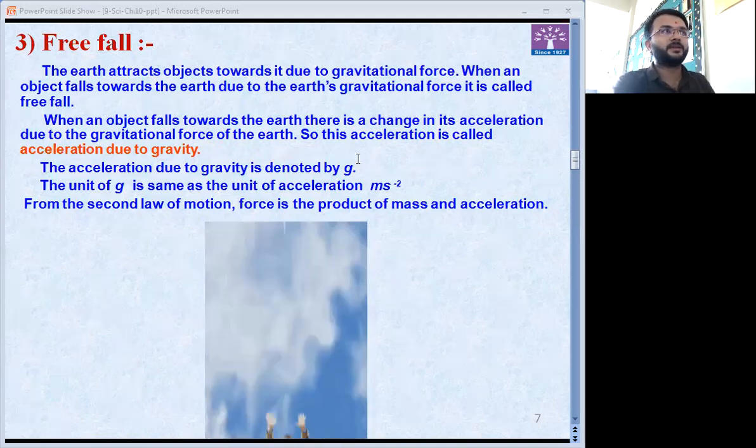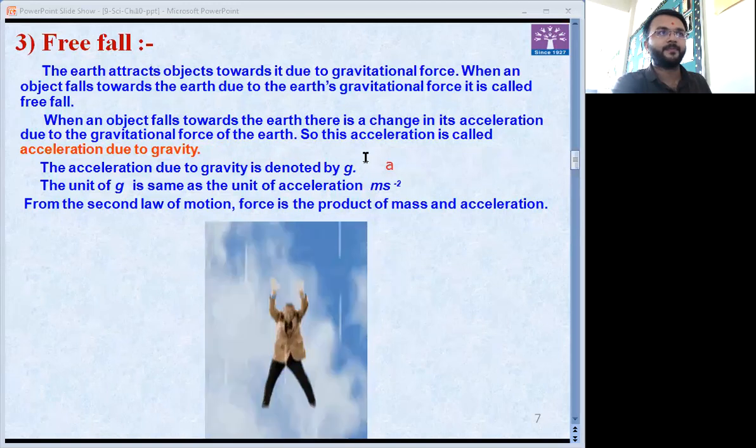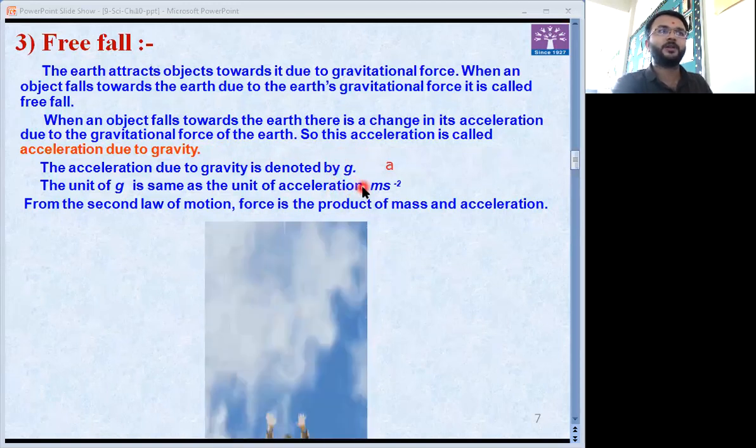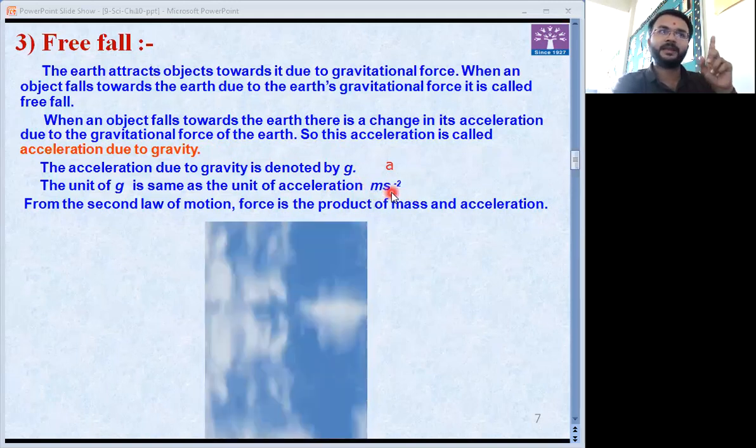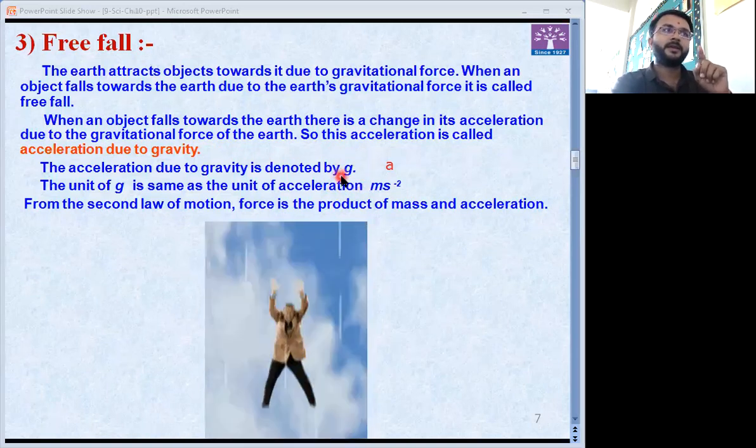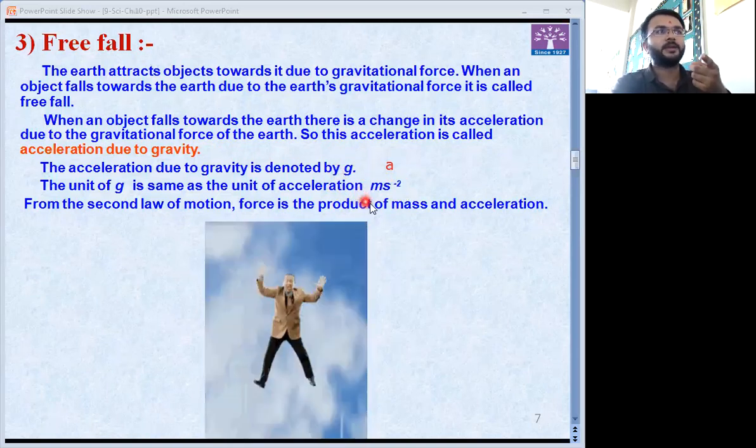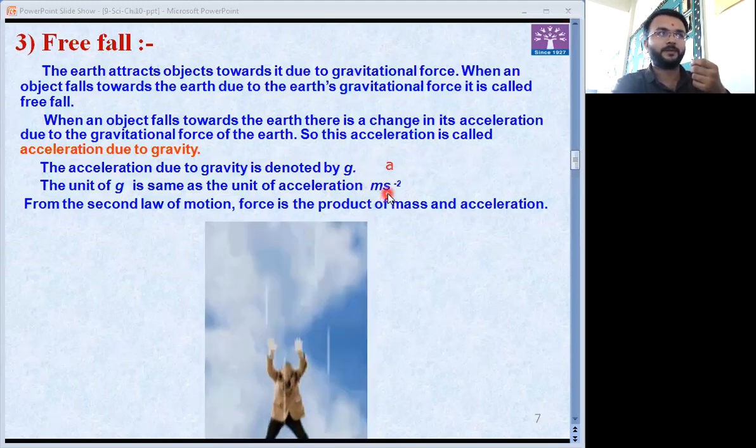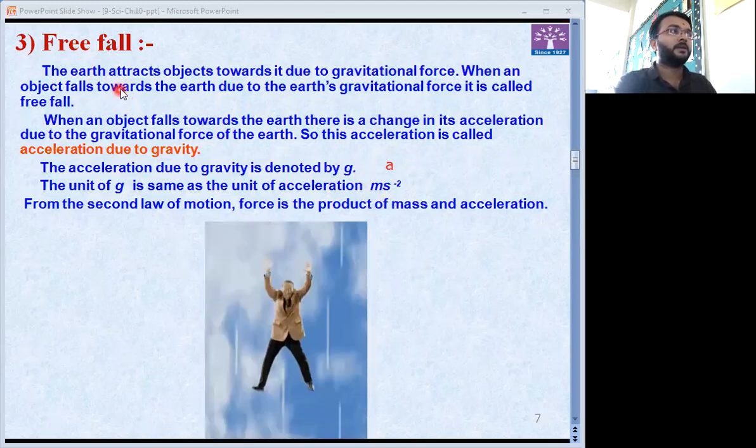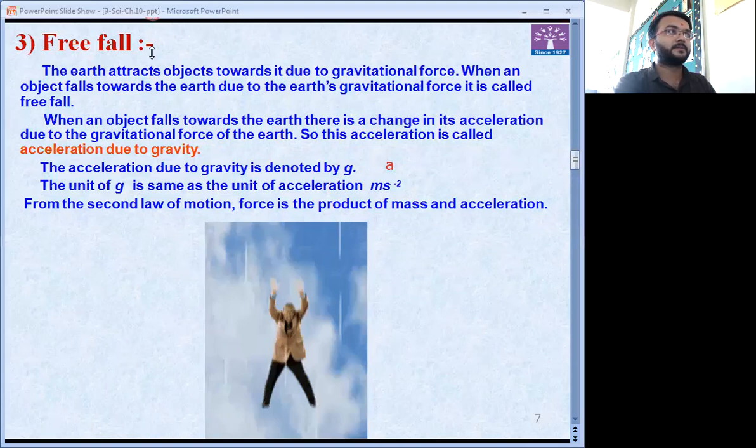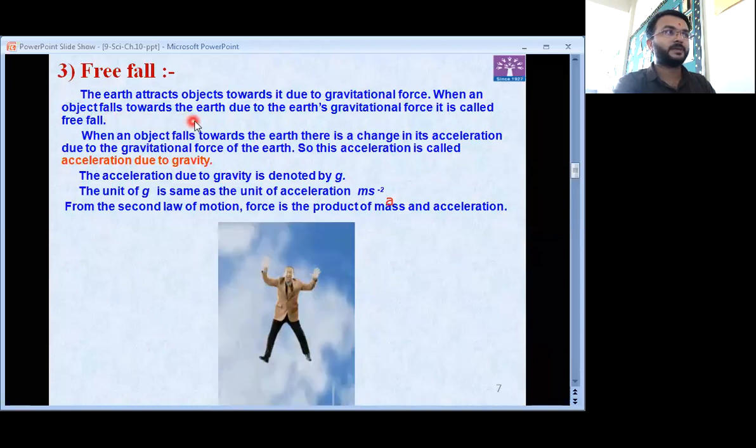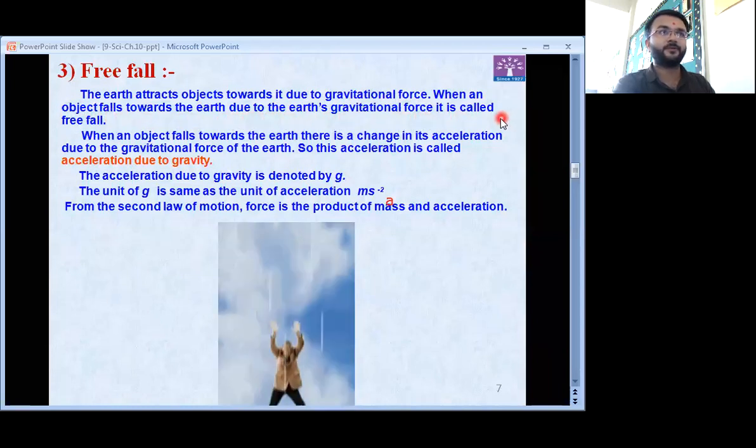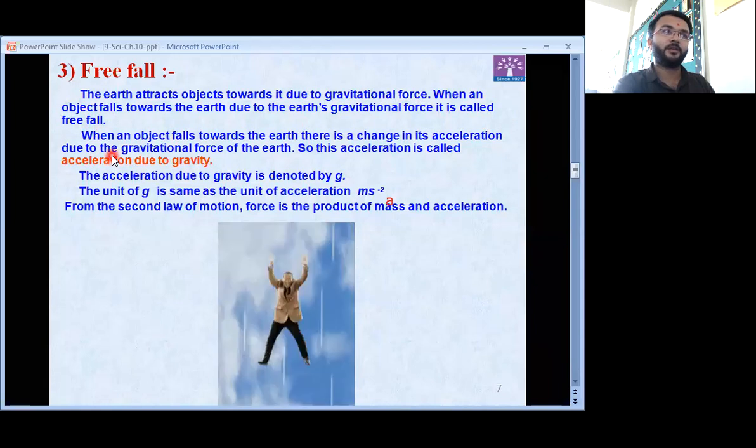For acceleration, we have the symbol small a. But here, for gravitational acceleration, we will use the symbol small g. Unit for acceleration is meter per second square. It was there in eighth chapter also. Again, over here, gravitational acceleration unit is also the same - meter per second square. Here, the earth attracts objects towards it due to gravitational force. When an object falls downwards due to earth's gravitational force, it is called freefall.